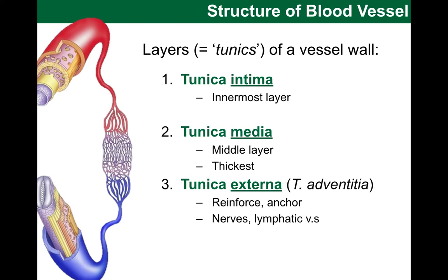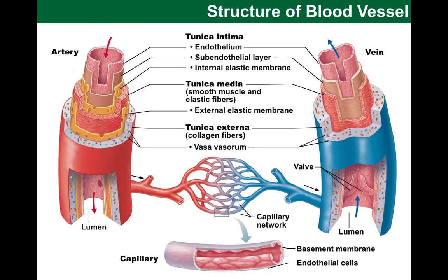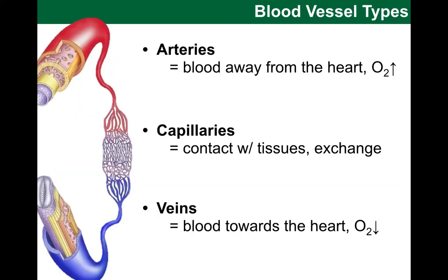That covers the three layers of the general structure of a blood vessel wall. Next, I have a rather nice diagram illustrating these. Please note the three layers we have just talked about: tunica intima, media, and externa. Now I would like to return to our earlier overview slide and discuss in a little more detail each of these types of blood vessels and some subtypes.